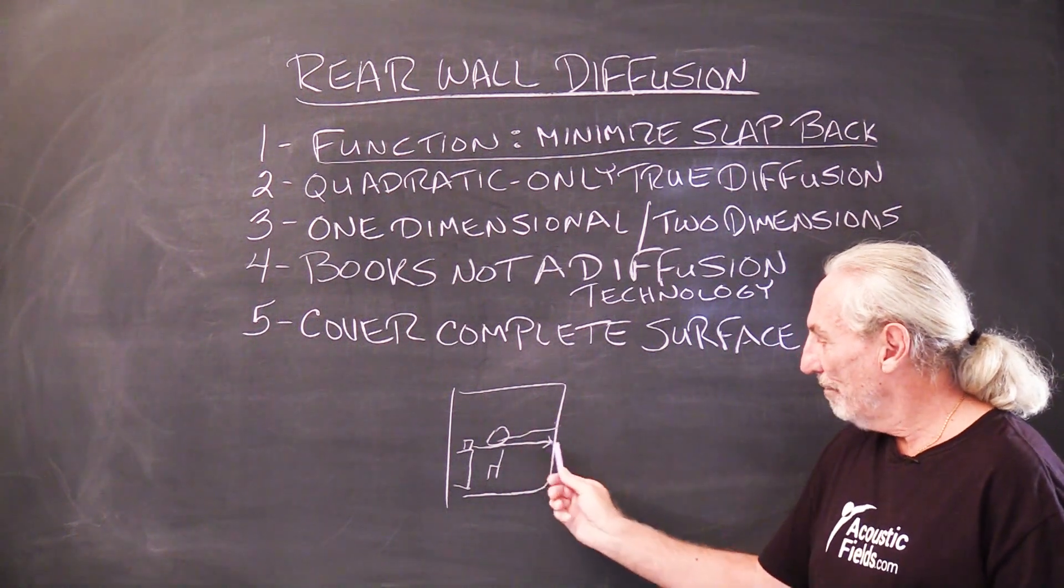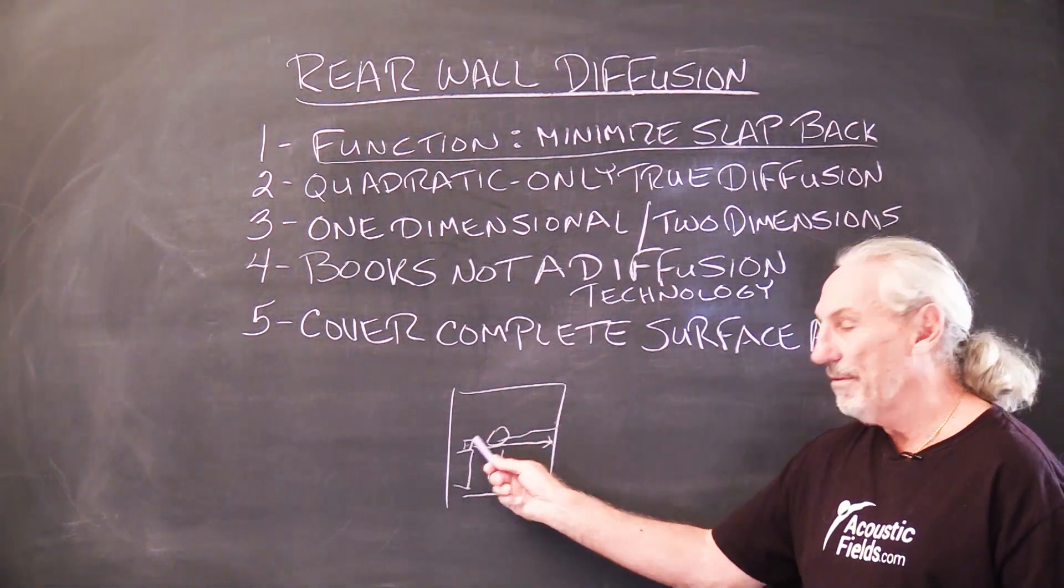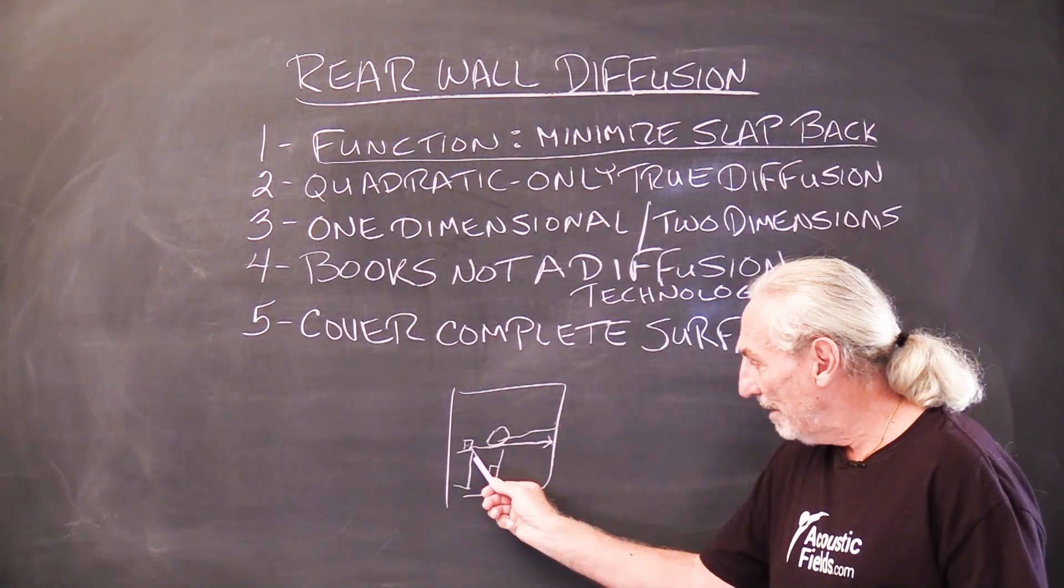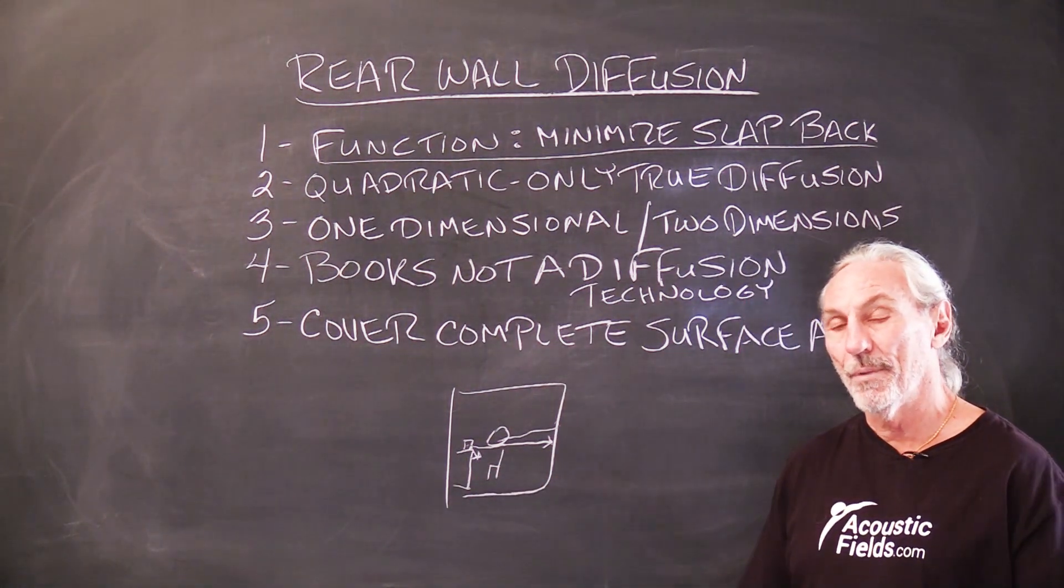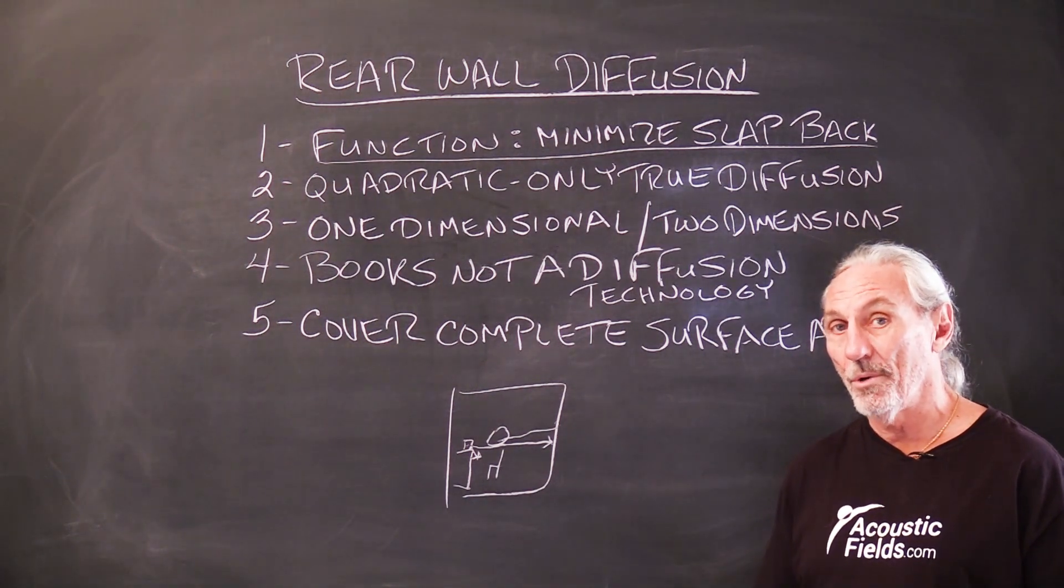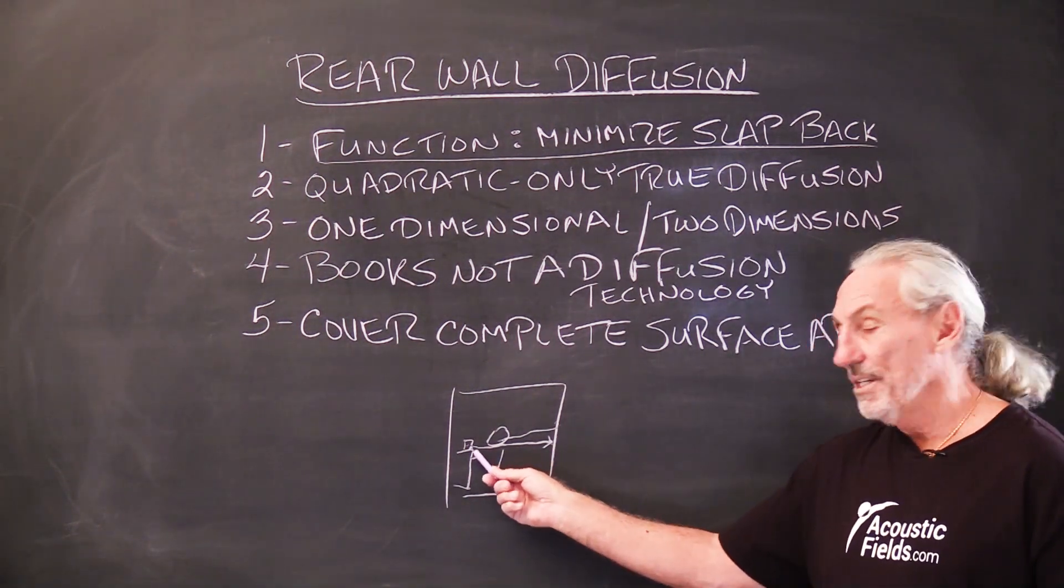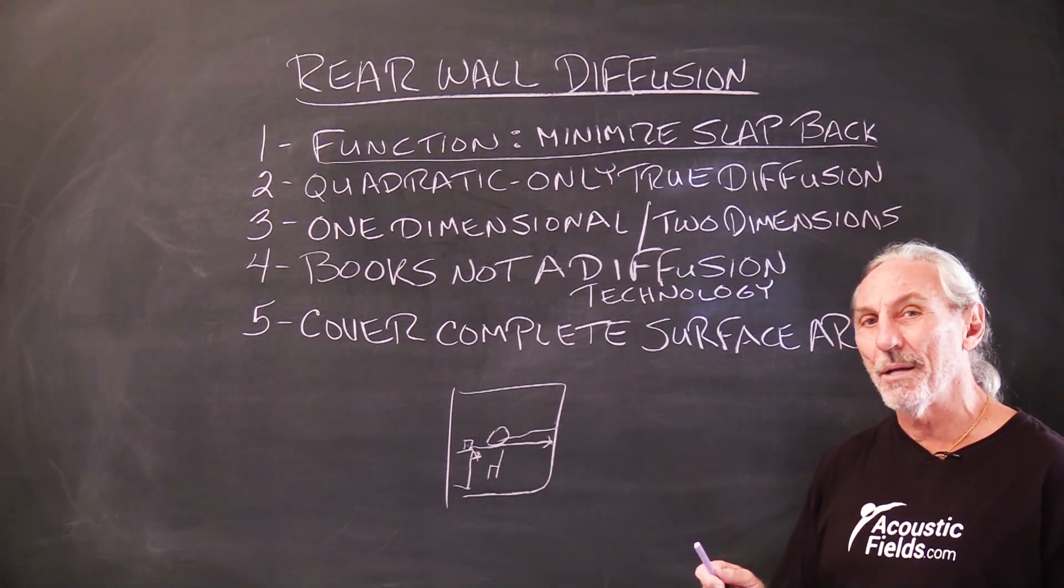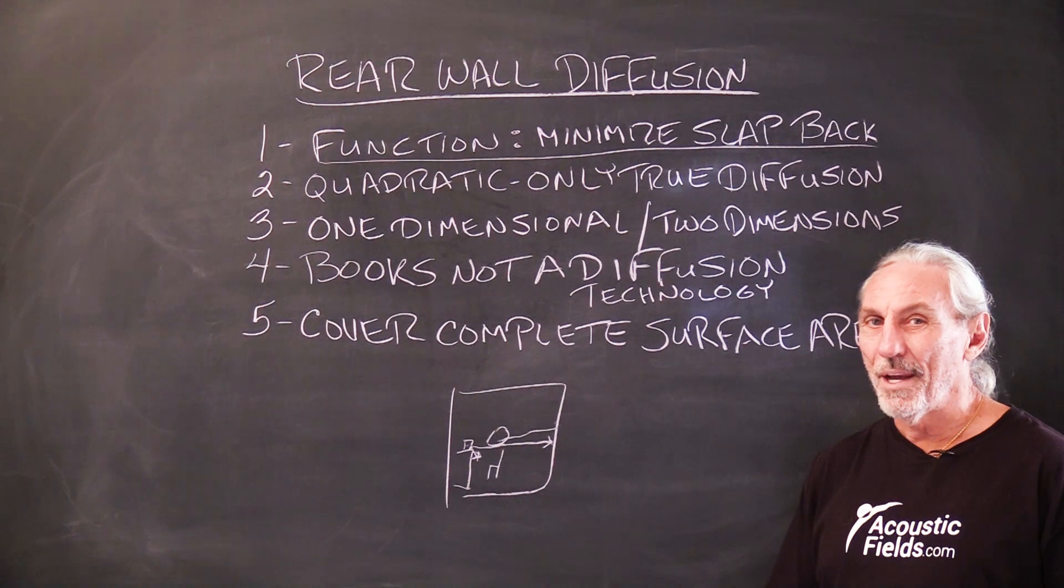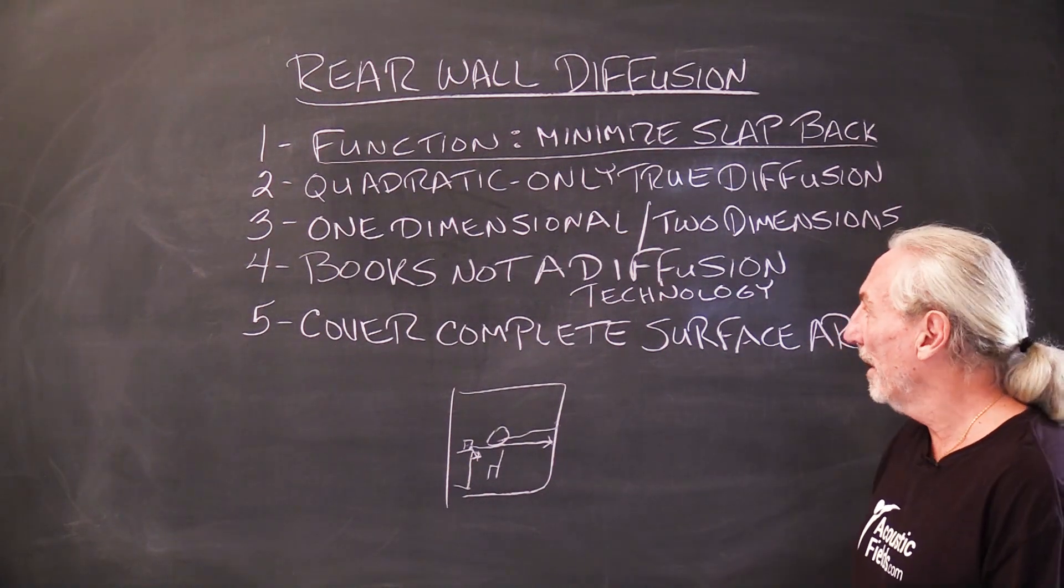This back and forth between the rear wall will eventually impact the mix. Just like the bounce off the console can have a negative impact on mix, but engineers realize that and work around it. This is an easier workaround, but this rear wall reflection is time delayed, so it can create some phase issues in your mixes if you aren't careful.